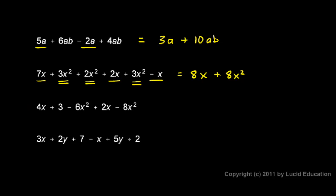In this one, 4x plus 3 minus 6x squared plus 2x plus 8x squared. All right, let's see what can be combined.